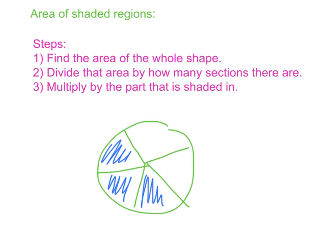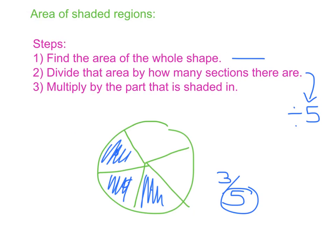The next type of problems you'll run into are where you're finding the area of just part of a circle or a shaded region. Here are the steps: Step one — find the area of the whole shape. Step two — divide that area by how many sections the circle is split into. So if the circle has five sections, divide by five, because you're finding, say, three-fifths of the circle — you divide by the denominator. Step three — multiply by the number of sections that are shaded. If three parts are shaded, multiply by three.